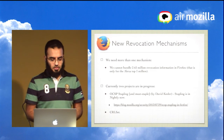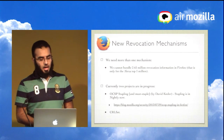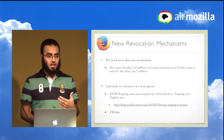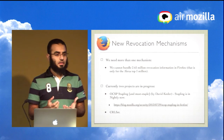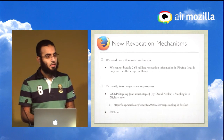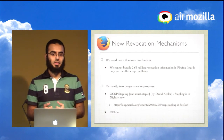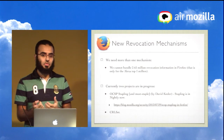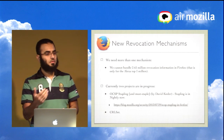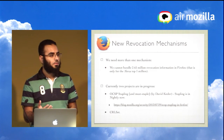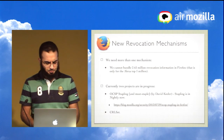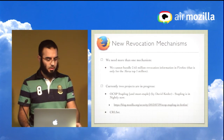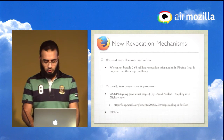We need more than one mechanism. There are two approaches within Mozilla. The first is OCSP stapling, done by David Keeler on the security engineering team and already in Firefox Nightly — the server bundles the OCSP response with its certificate, so you get both at once. This eliminates the privacy problem of the CA tracking user activity. The other mechanism is the CRLSet, which is what I'm working on.